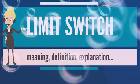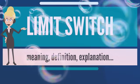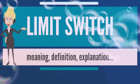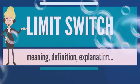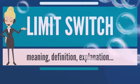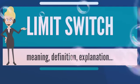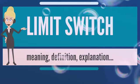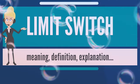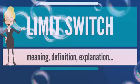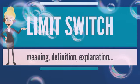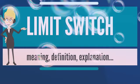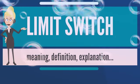A limit switch is an electromechanical device that consists of an actuator mechanically linked to a set of contacts. When an object comes into contact with the actuator, the device operates the contacts to make or break an electrical connection. Limit switches are used in a variety of applications and environments because of their rigidness, ease of installation, and reliability of operation.